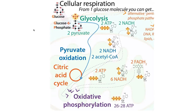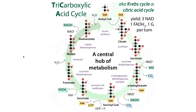Metabolism contains all sorts of different pathways that are all interconnected: the pathways of fat breakdown and fat building, sugar breakdown and sugar building, amino acid breakdown and amino acid building, nucleic acid breakdown and nucleic acid building. All of these pathways are going to be interconnected, and one of the central hubs where they all come together is the tricarboxylic acid cycle — sometimes called the Krebs cycle or the citric acid cycle.